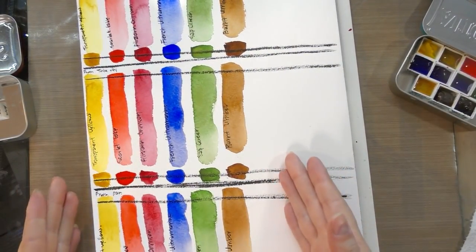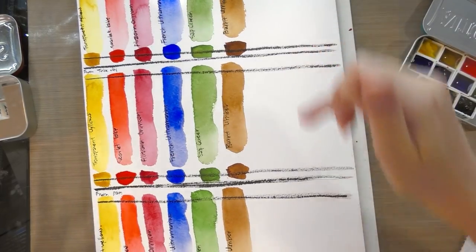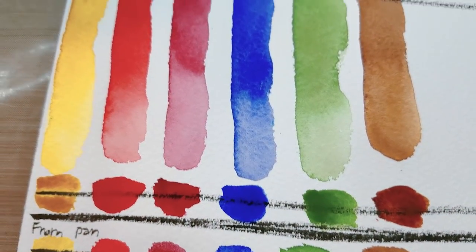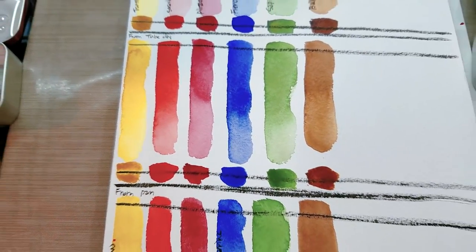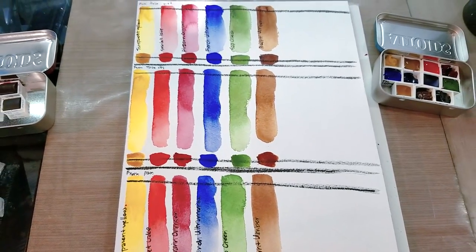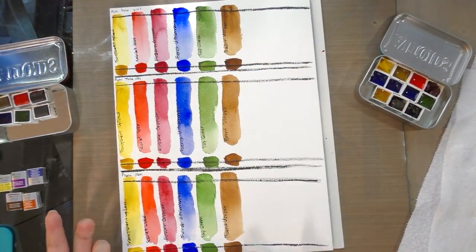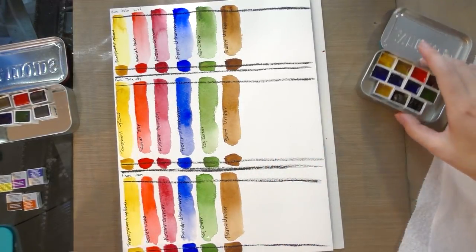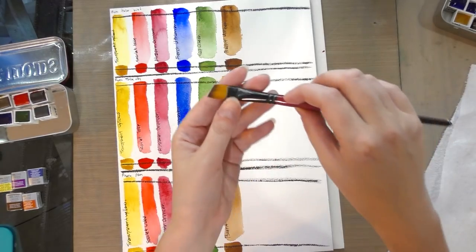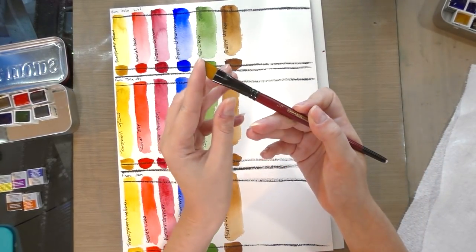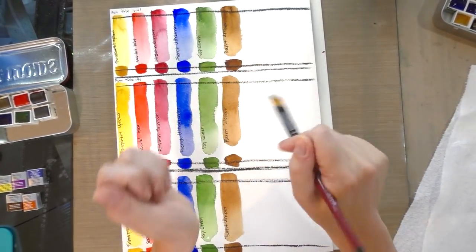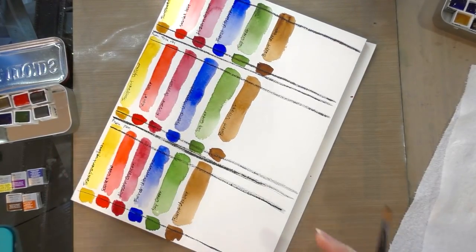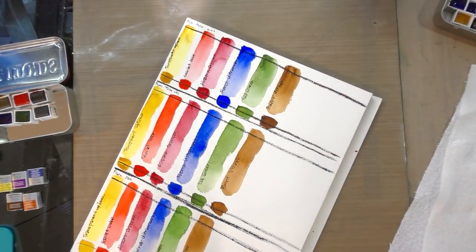So this has pretty much dried. These two have had a few days to dry out. So I'm going to do my lift testing now, but I sort of suspect this is going to lift a little bit easier just because it hasn't had as long an opportunity to really soak in and dry into the fibers. So I'm going to use a synthetic angled shader to do my lifting. And I'm just going to go ahead and do that in time-lapse.